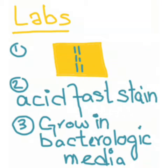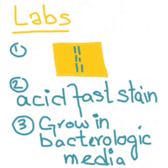For laboratory diagnosis, we can see the branching rods or filaments of the gram-positive rod upon microscopic study. This organism is weakly acid-fast, meaning that its staining process requires a weaker solution of hydrochloric acid in order to differentiate it from other counterparts such as mycobacteria.